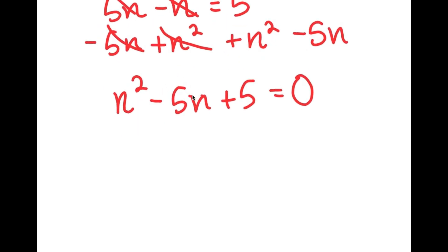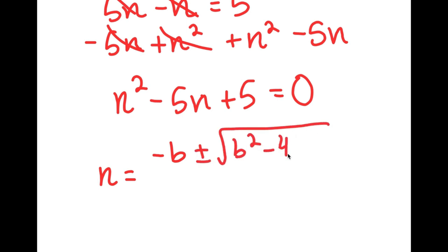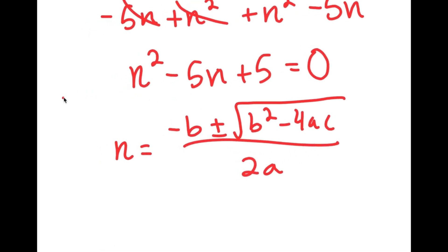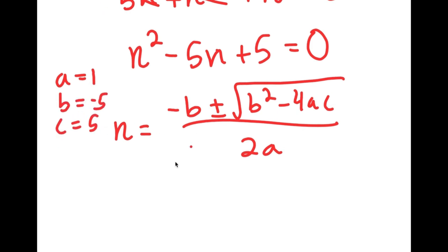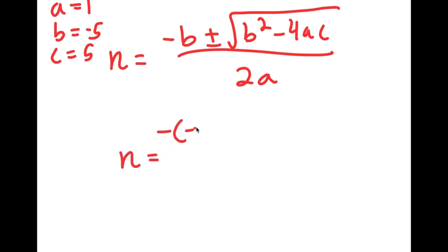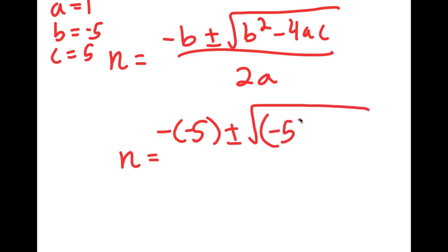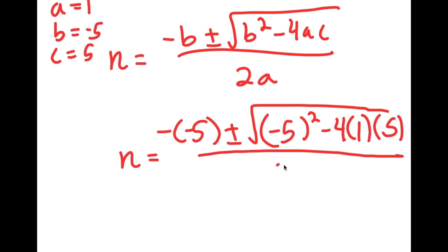Now, from here, to solve this I can use the quadratic formula, which is negative b plus or minus the square root of b squared minus 4ac, all over 2a. In this case, a is 1, b is negative 5, and c is positive 5. So I get n is equal to negative of negative 5, plus or minus the square root of negative 5 squared minus 4 times 1 times 5, all over 2 times 1.